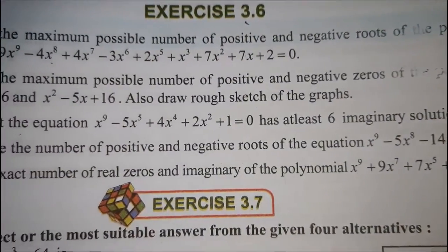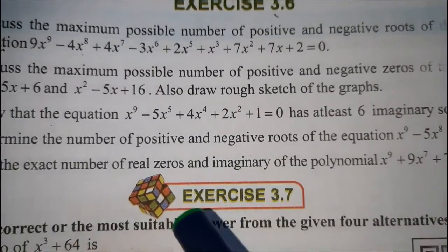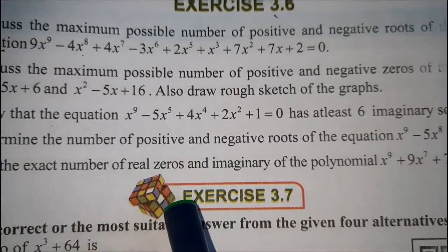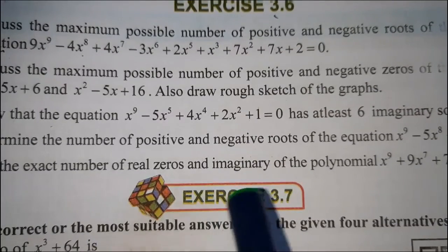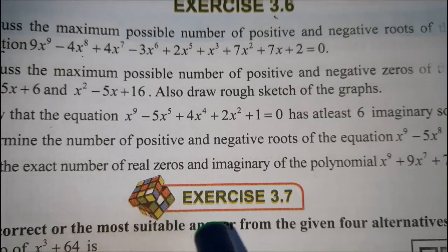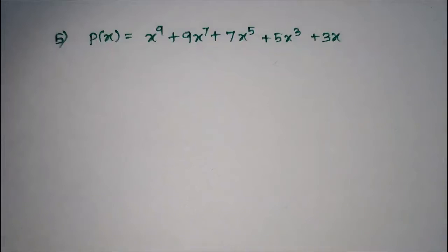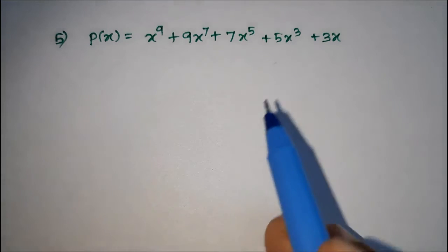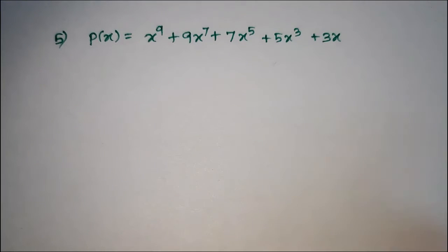We need to find the exact number of real zeros and imaginary roots. To find the exact number, we have to use Descartes' rule. Let us take the given polynomial as P of x. Using sign changes, we can determine the maximum number of positive and negative real roots.